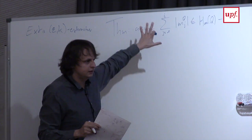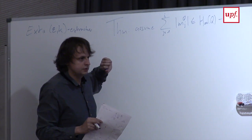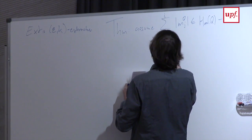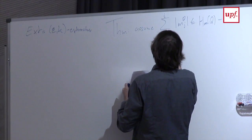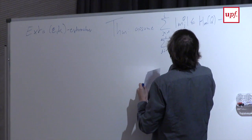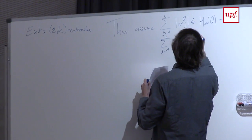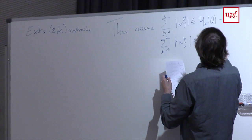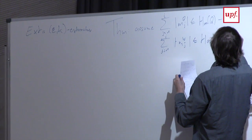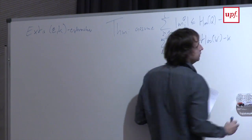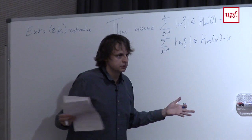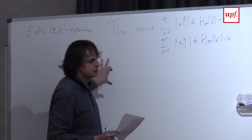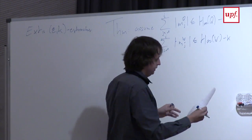Assume that all messages up to message i sent from Quentin to Wendy have total length at most the length of Q minus k, where k is what we need to still extract — so as long as the messages are just k bits shorter than the min entropy originally present in Q.